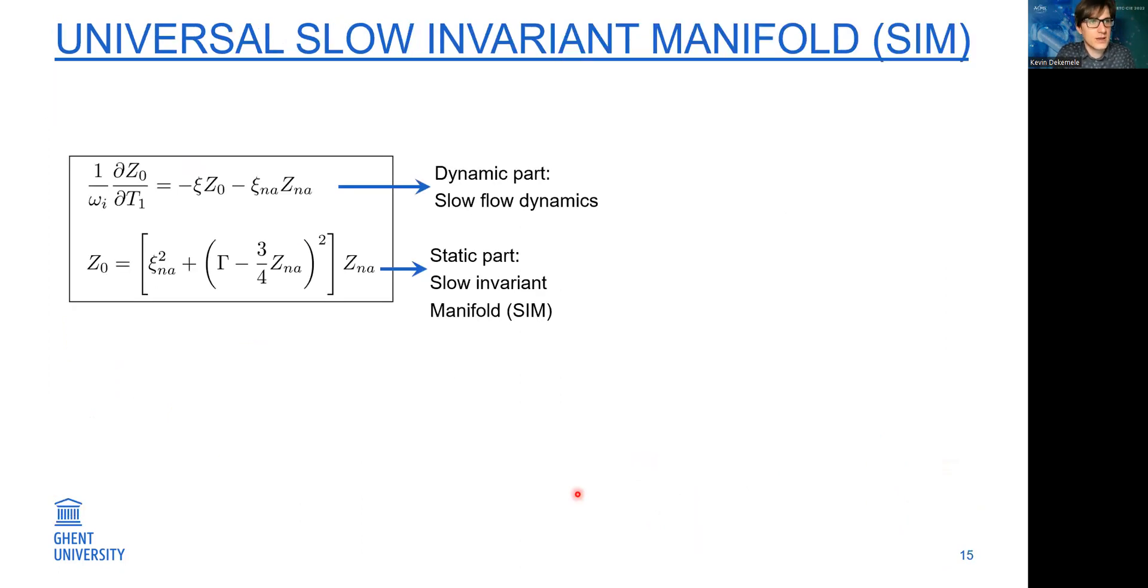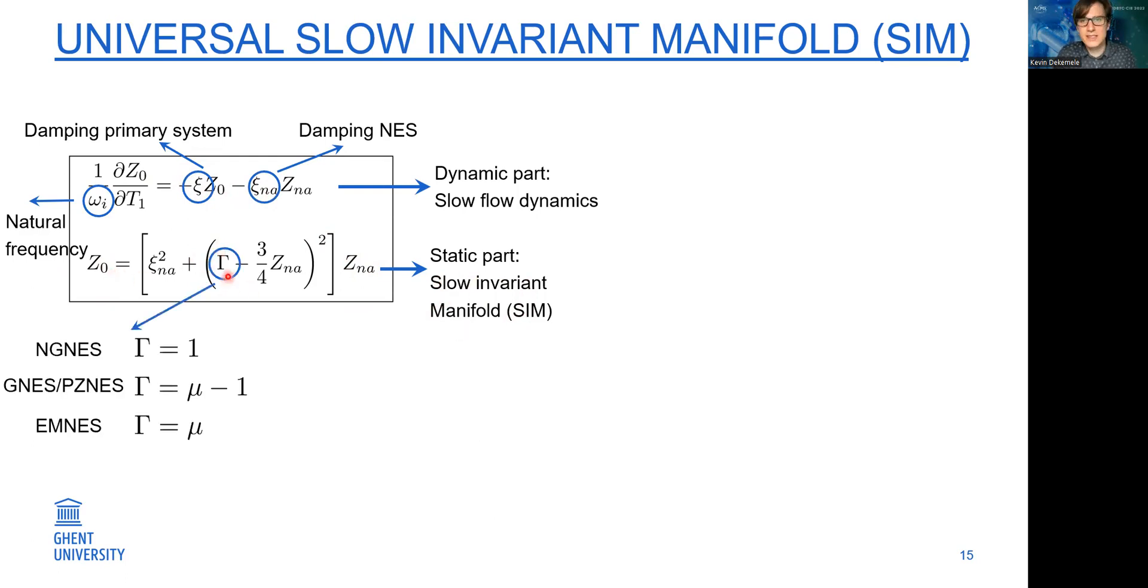The final part is when we introduce some energy-like variables, where this z0 is energy-like for the host system and zna for the absorber. What we get for all four configurations is the same expression, which is the universal slow manifold and universal slow flow dynamics. The top part is a dynamic part and it says this c0, the energy in the host system, always decreases if we have some damping. The second part is a static part which relates z0 and zna. In the slow manifold, the static part has this capital gamma. This is where the difference is for each configuration. This gamma is one for the non-grounded NES, for the grounded it's mu minus one, and for the piezoelectric it's mu.